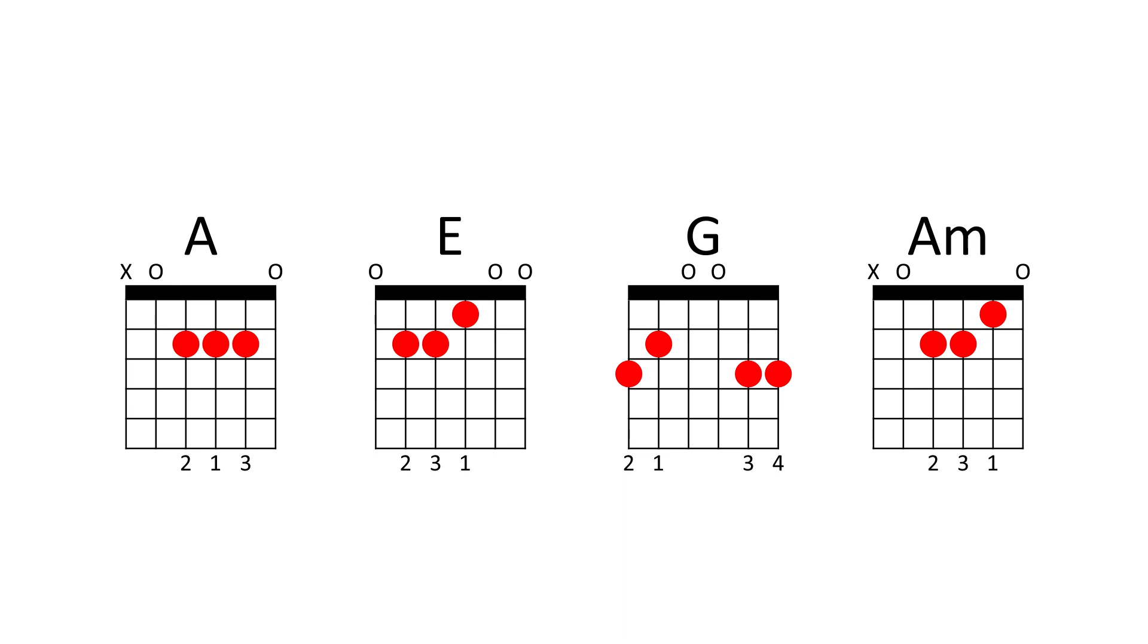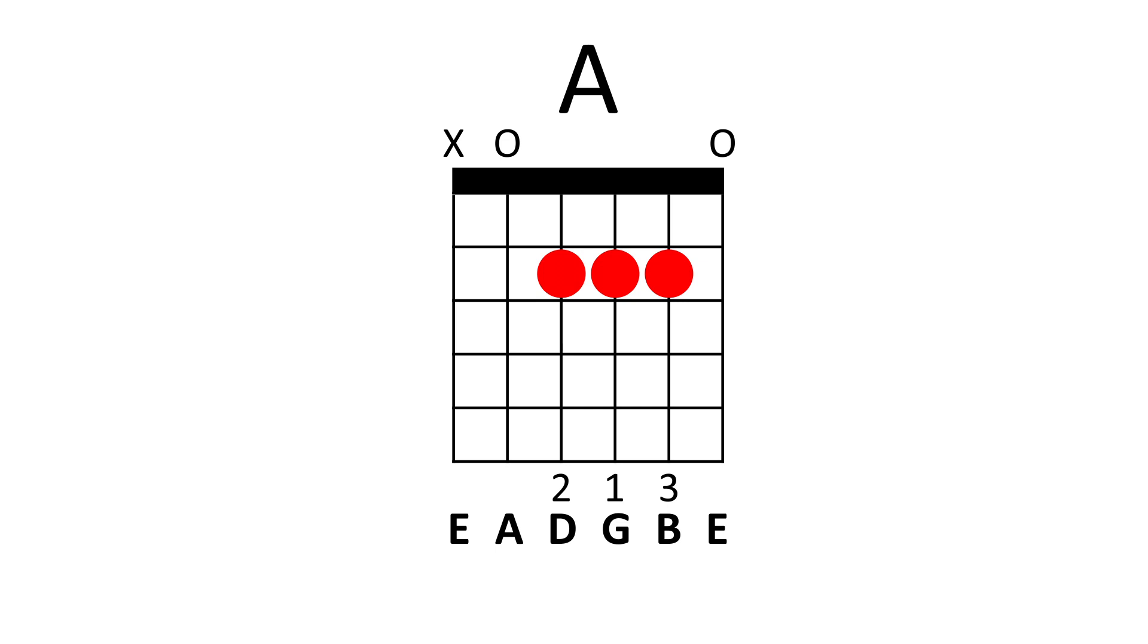So beginning on the A major chord, let's figure out what notes we're playing when we fret those notes on the fretboard. If you're not sure how to count what notes you're playing on the fretboard, go back to the introductory course and check out the lesson called Musical Notes.